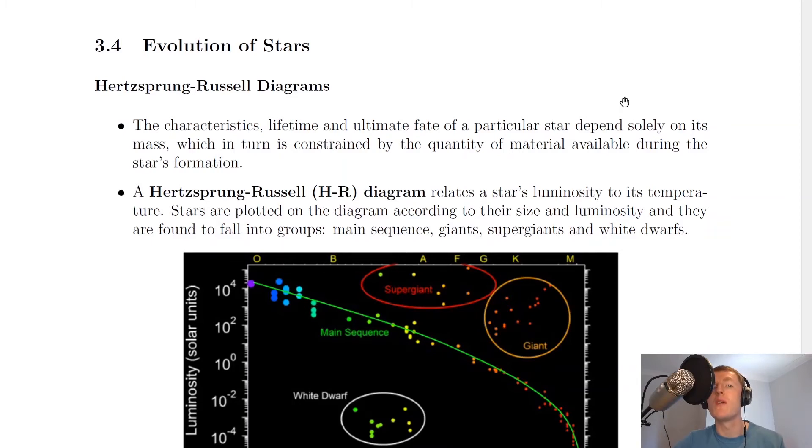Before we look at the typical life cycle of stars, we're going to look at the Hertzsprung-Russell diagram. This is a really important diagram which you need to be able to interpret. The characteristics, lifetime and ultimate fate of a particular star depends solely on its mass, which in turn is constrained by the quantity of material available during the star's formation.